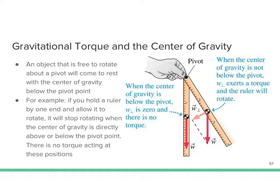Another way to think about why things rotate is that weight acts straight down toward the center of the Earth. If you pinch a ruler at an angle, there's a perpendicular component of weight. If the object is not straight up and down, that perpendicular component causes angular acceleration — there is a torque being exerted by gravity. So an object will naturally want its center of mass directly below the pivot point.